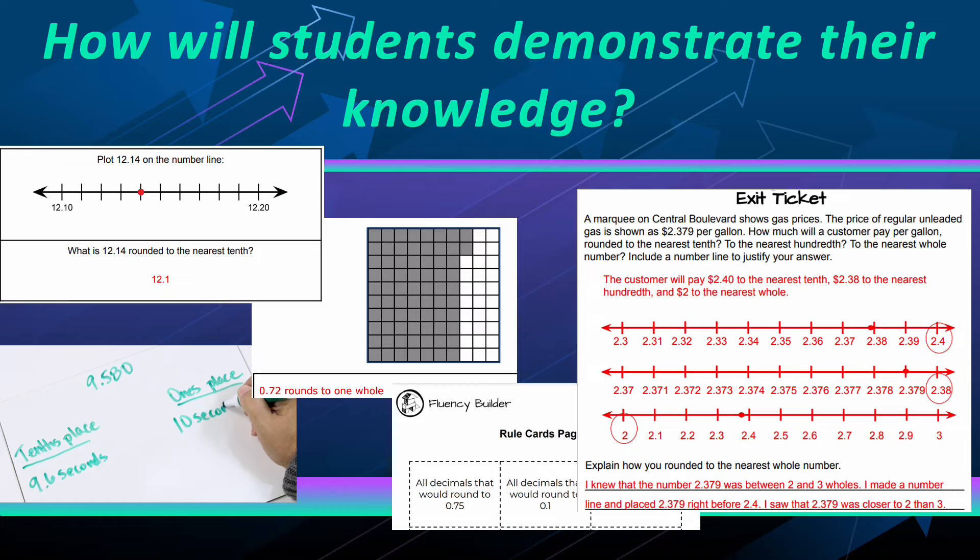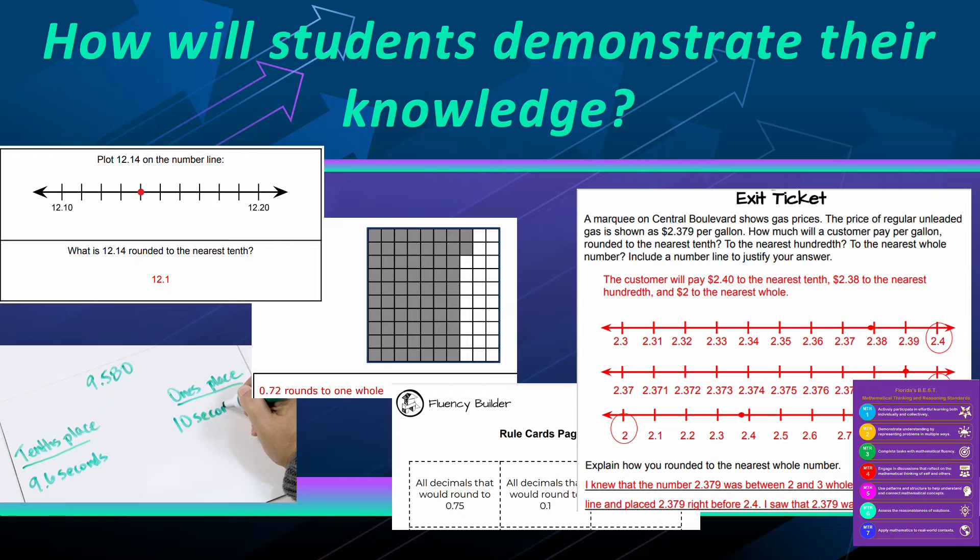or through a fluency builder. These are examples of formal and informal assessment that a teacher can use to gauge a student's understanding, and they were all examples from the STEMscopes resources. These can also show MTR 3 and 7, and I want to point out MTR 7: with these resources, they are given opportunities to apply rounding to real-world situations.